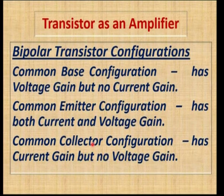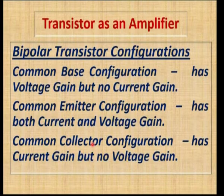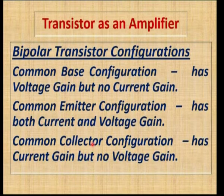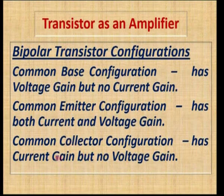Next we move on to transistor as an amplifier. There are three different configurations. In common base configuration, we get voltage gain but no current gain. In common emitter configuration, we get both voltage gain and current gain. In common collector configuration, we get only current gain with no voltage gain.